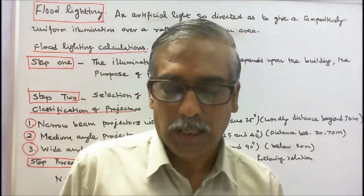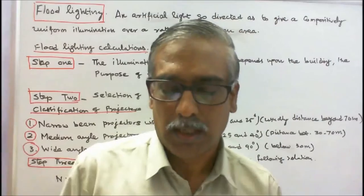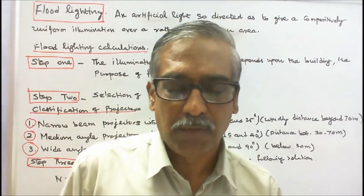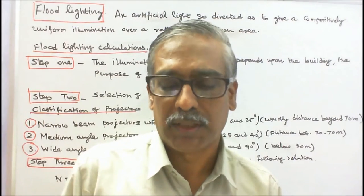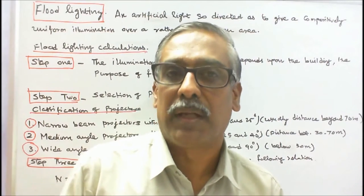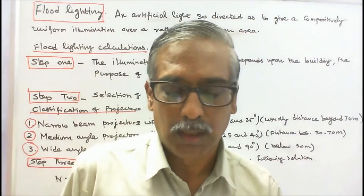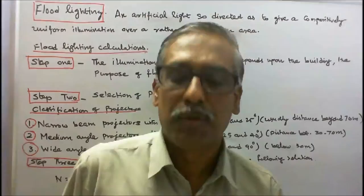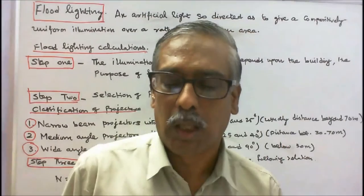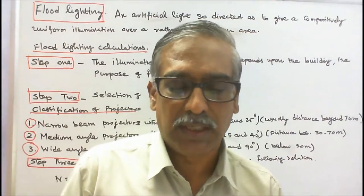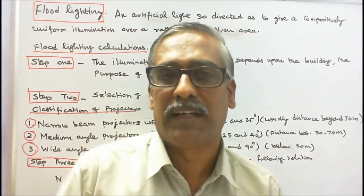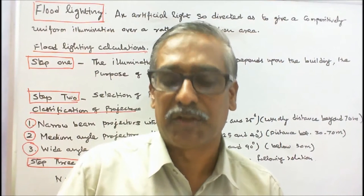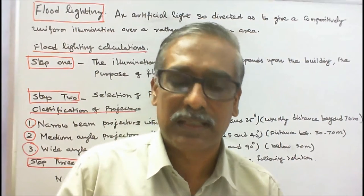Today's topic is floodlighting. An artificial light so directed or diffused as to give a comparatively uniform illumination over a large given area is known as floodlighting. Floodlights are broad-beamed, high-intensity artificial lights. They are often used to illuminate outdoor playing fields while an outdoor sport event is being held during low light conditions.